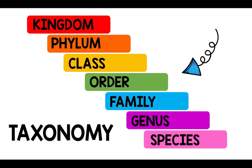So, in other words, it's just like our song. Kingdom, filum, class and order. Kingdom, filum, class and order. Family, genus, species. Well, that's easy to remember.